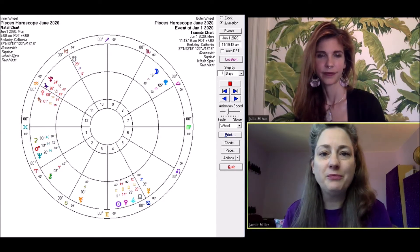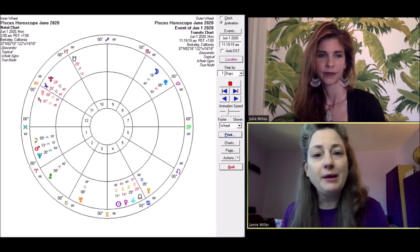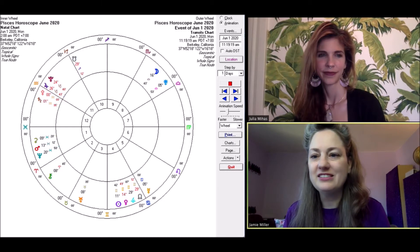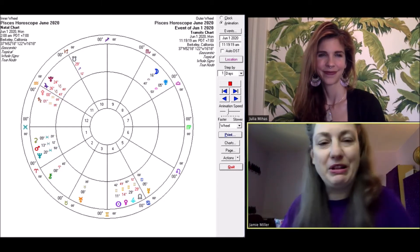And we're going to begin, of course, as we usually do with Mercury, Venus, and Mars. I'm Jamie Kale Miller of Pandora Astrology. And Julia Mijas is going to begin with Mercury. Hey, Julia, what's up for Pisces this month?